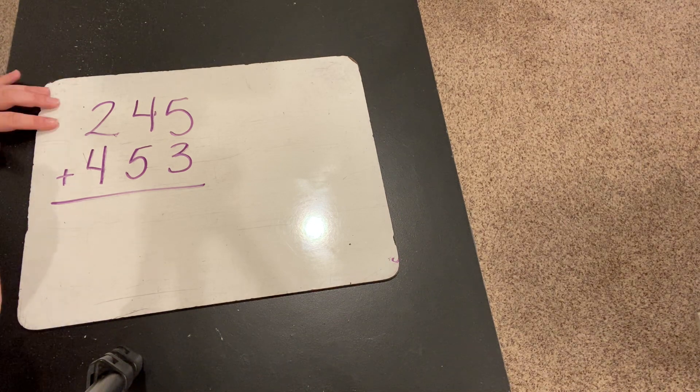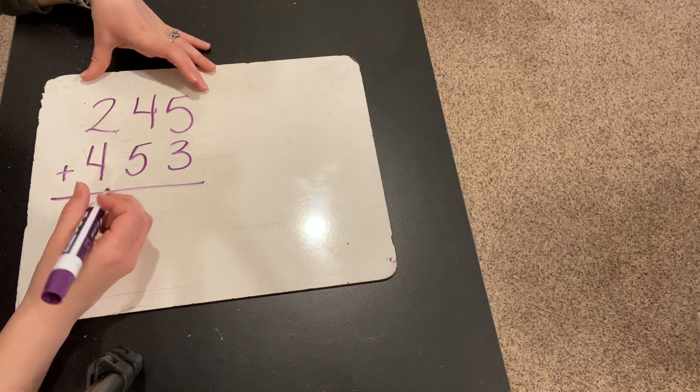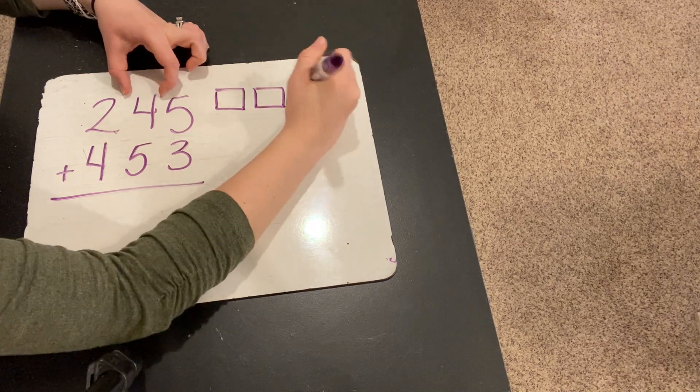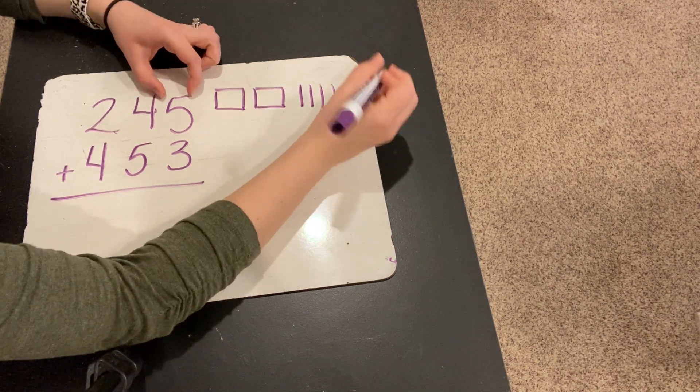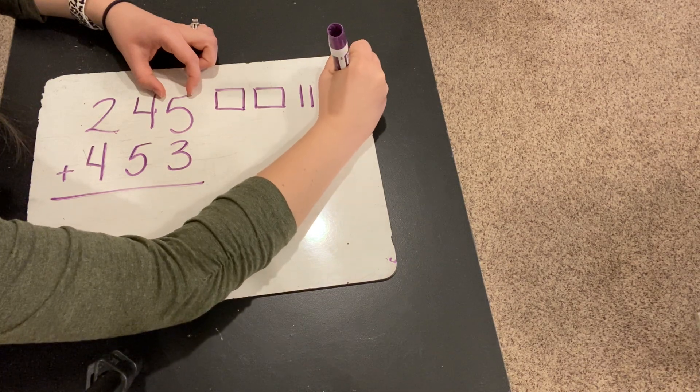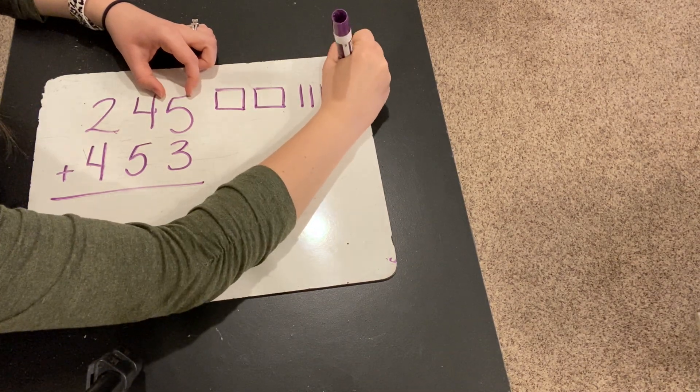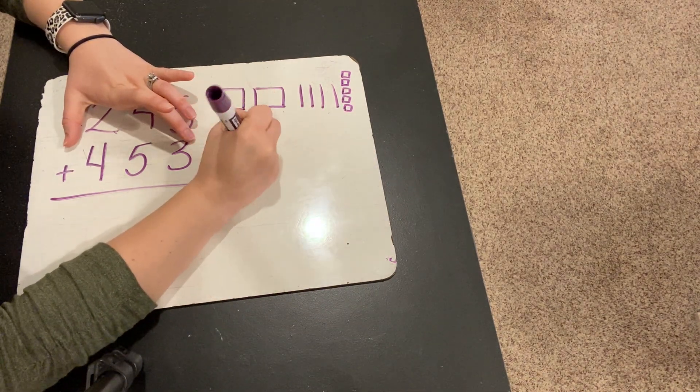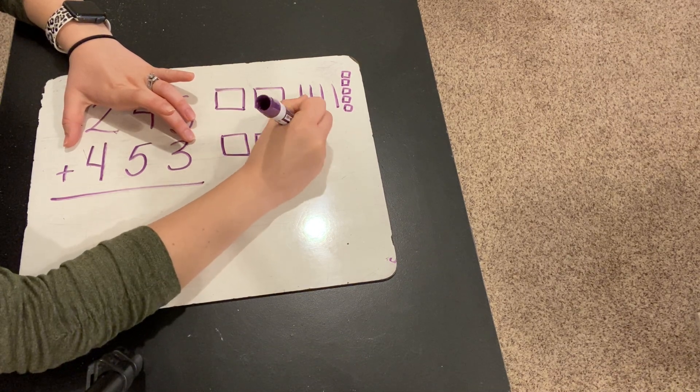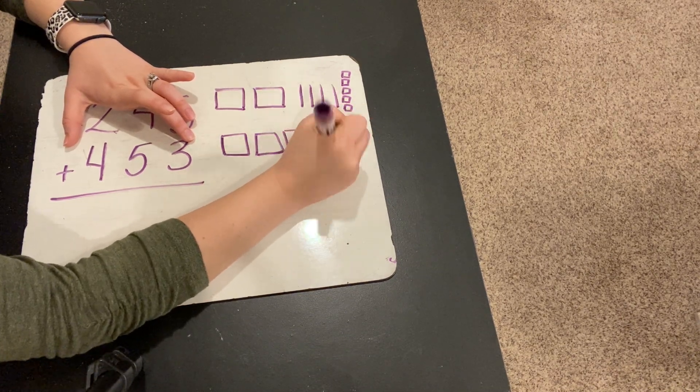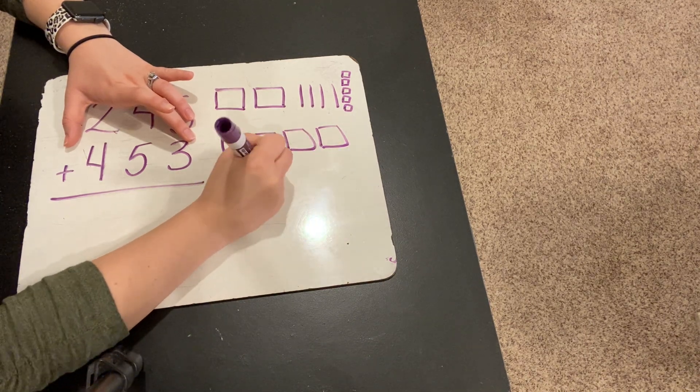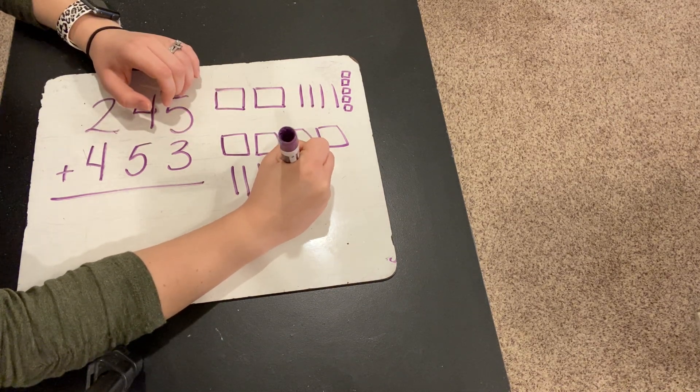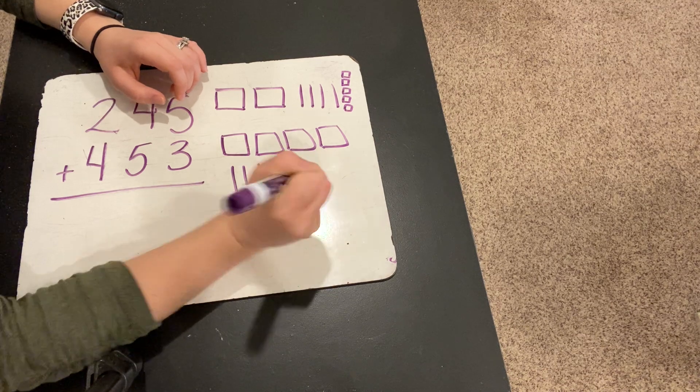Okay, let's check your work. So, with 245, to model that number, you should have put 200, 4 tens, and 5 ones. And then for 453, you should have used 4 hundreds, 5 tens, and 3 ones.